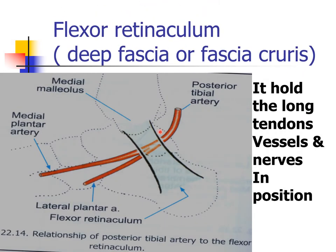Now, deep fascia or the flexor retinaculum. The deep fascia is named fascia cruris. It encloses the extensor, peroneal, and flexor compartments of the leg, and in a tight sleeve it attaches to the anterior border of the tibia and the malleoli. The flexor retinaculum is a thickened band that extends from the medial malleolus to the back of the calcaneum, bridging the deep flexor tendons and neurovascular bundle. It holds the tendons, vessels, and nerves in position. The flexor retinaculum is a modification of the deep fascia or fascia cruris. There is also an extensor retinaculum and peroneal retinaculum.